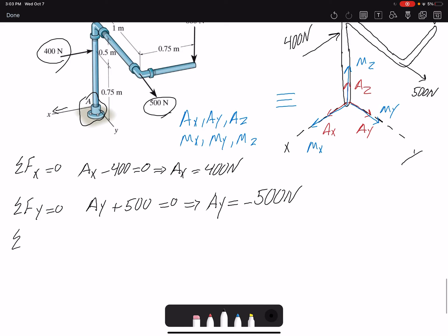Summation of forces in Z equals zero: AZ minus 600, therefore AZ equals 600. So I found three of my unknowns, the three forces.